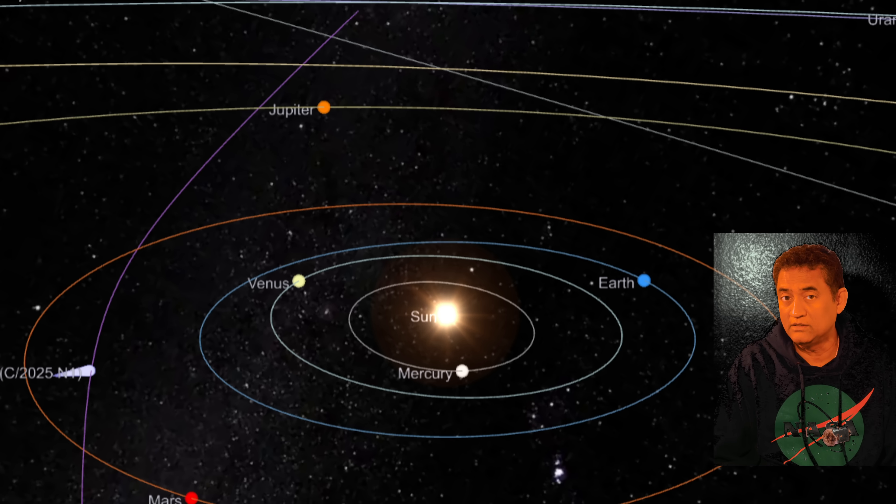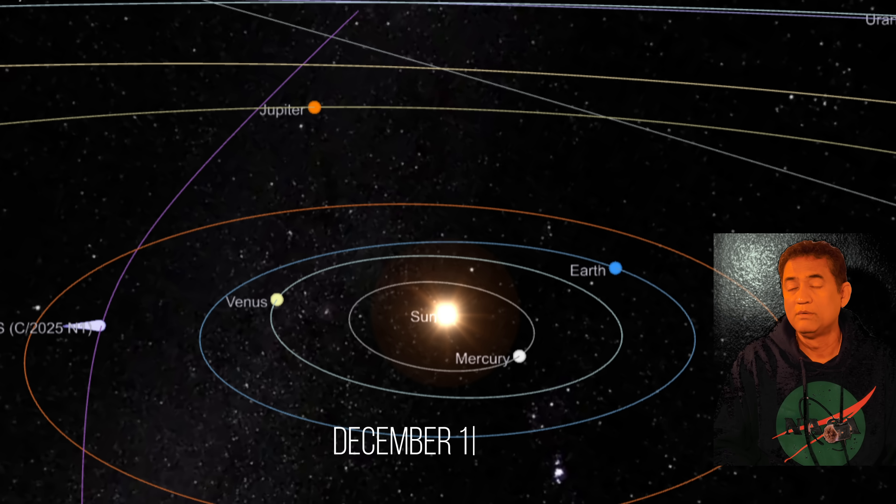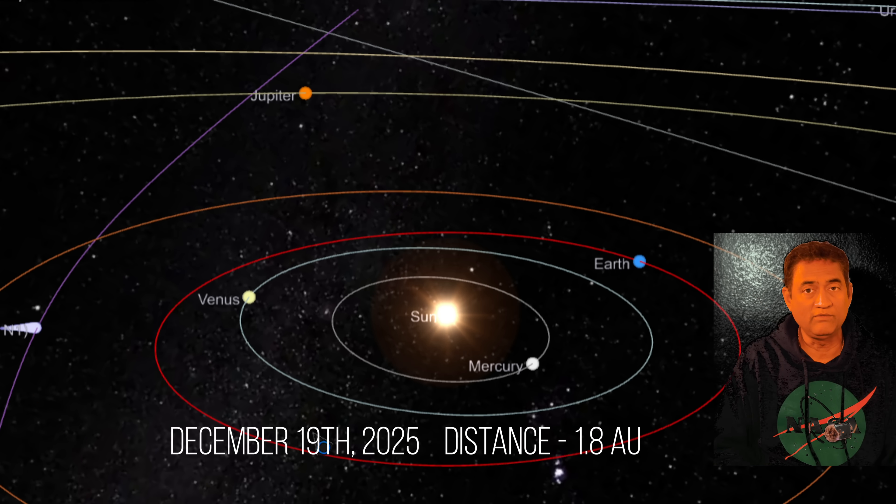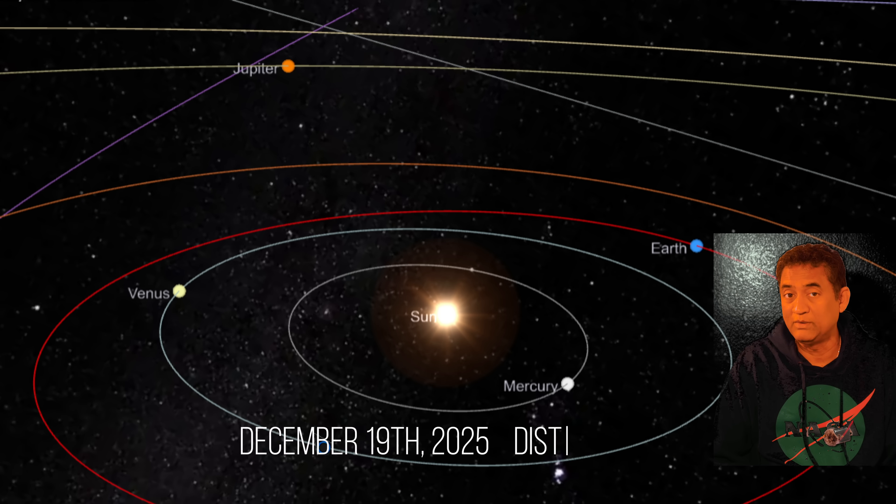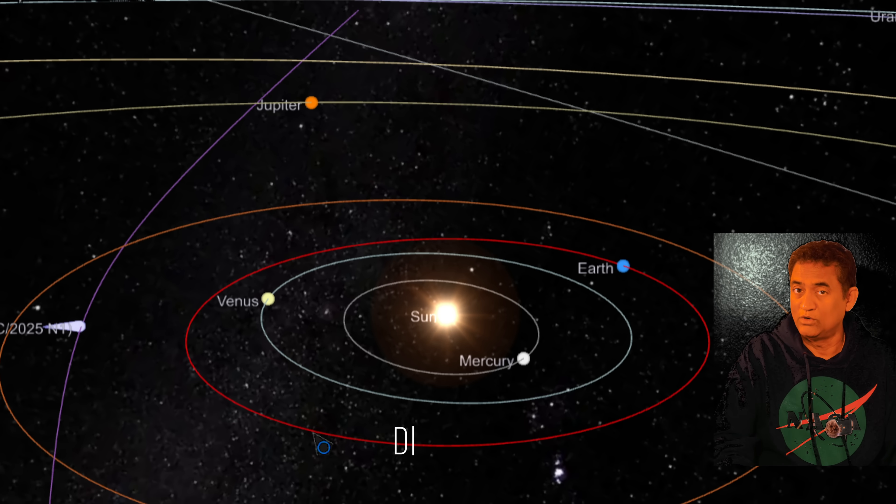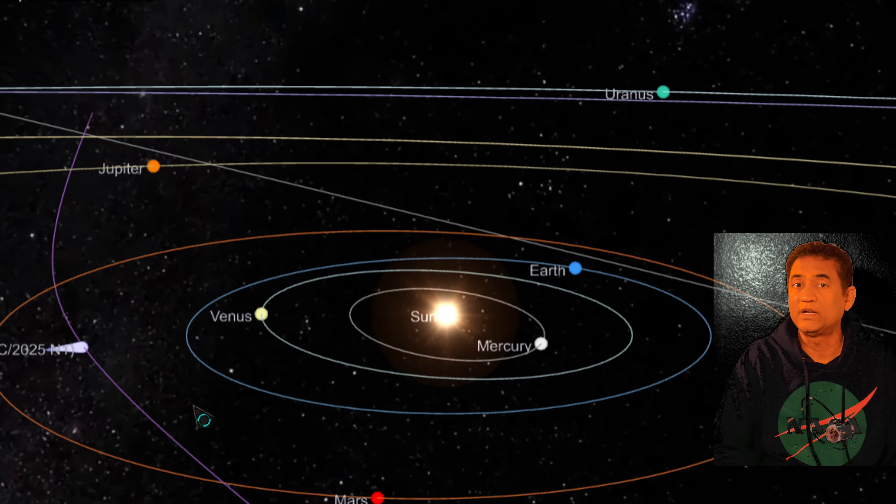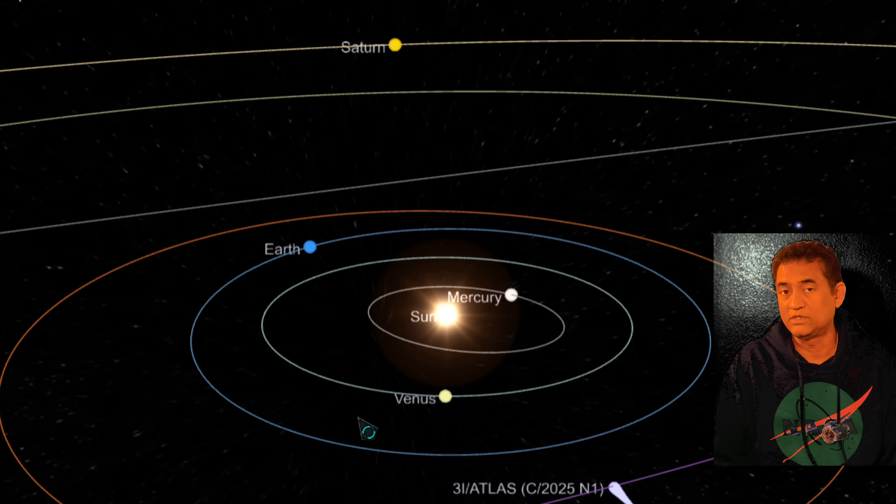And December 19th, it will make its closest approach to Earth, passing at 1 AU, safely distant for our telescopes to keep watching. So no, it's not a threat for us, but it's an incredible opportunity to study this comet.